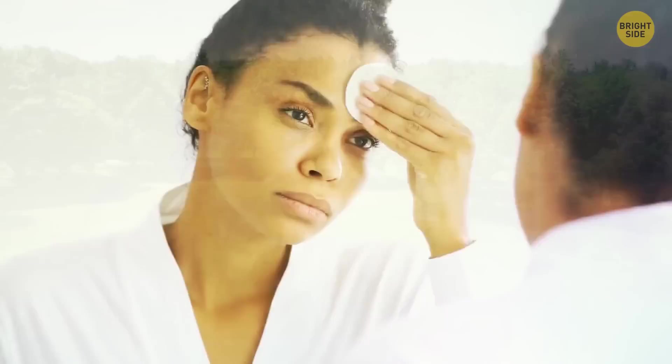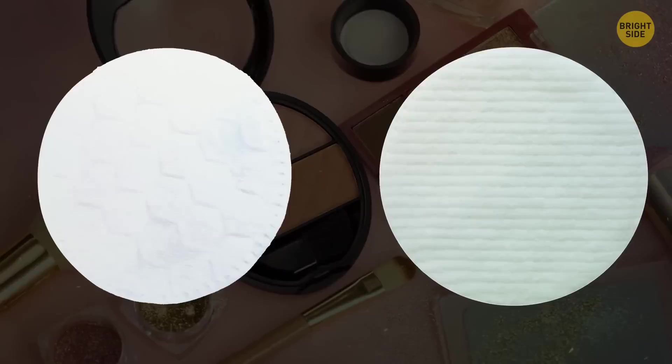Your makeup pads have two different sides for a reason. The bumpy side is used for applying makeup, while the flat side is for removing it.